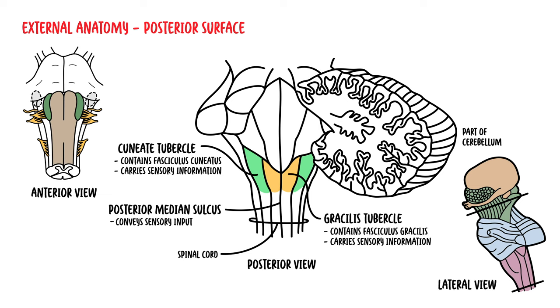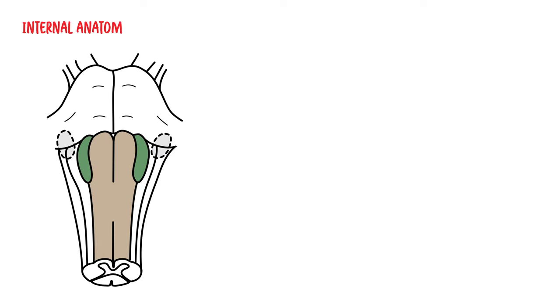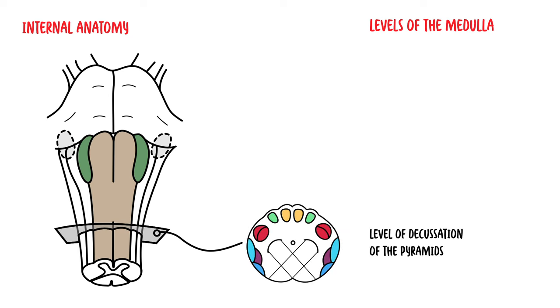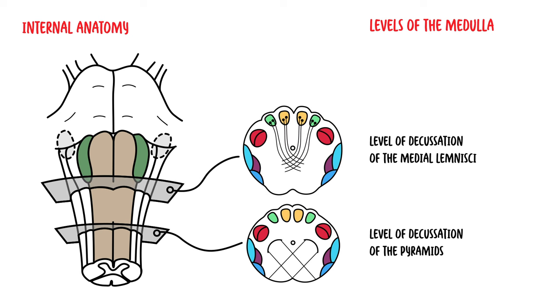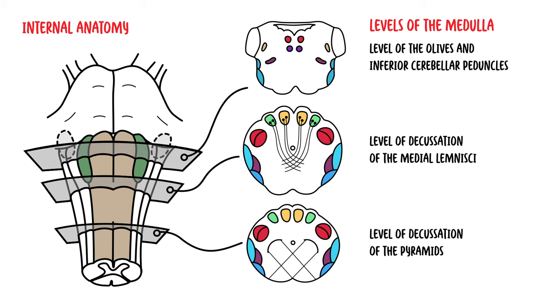Now let us focus on the internal anatomy. To understand the internal structures of the medulla, we will view it in cross sections and discuss the anatomy at three levels: the level of decussation of the pyramids, the level of decussation of the medial lemniscus, and the level of the olives and inferior cerebellar peduncles.